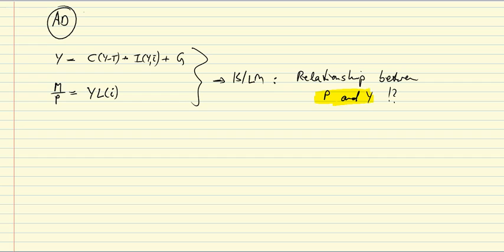So how do we get from these two relationships, the goods market and the financial market, to a relationship between P and Y? I will go to a new page and show you a graphic derivation. First of all, let's recall the financial market.